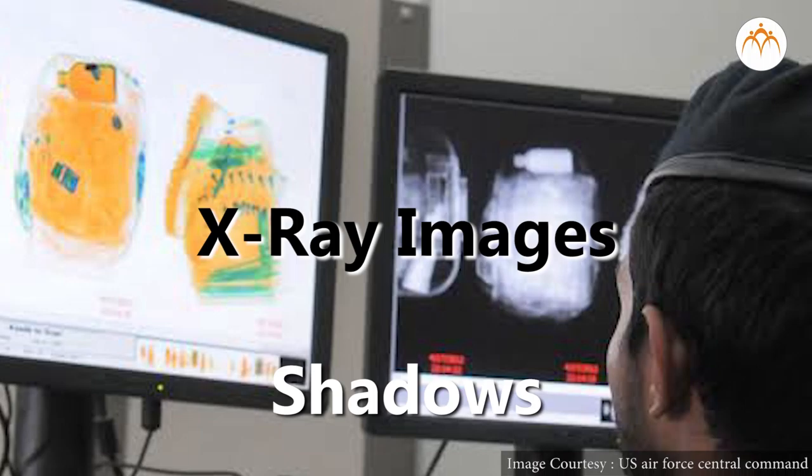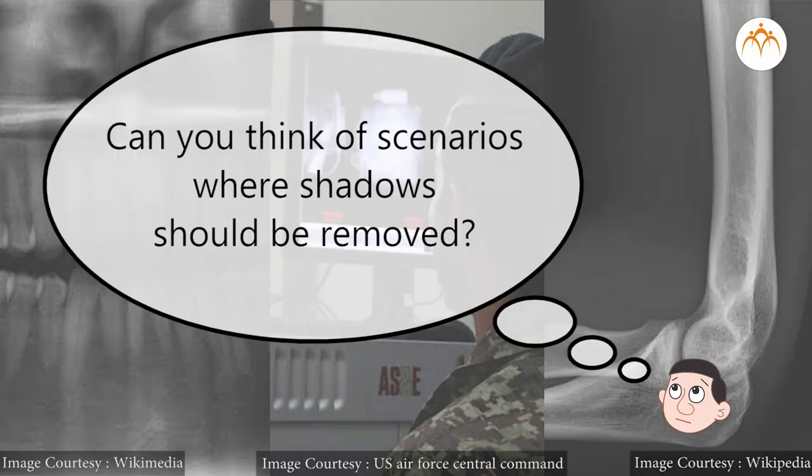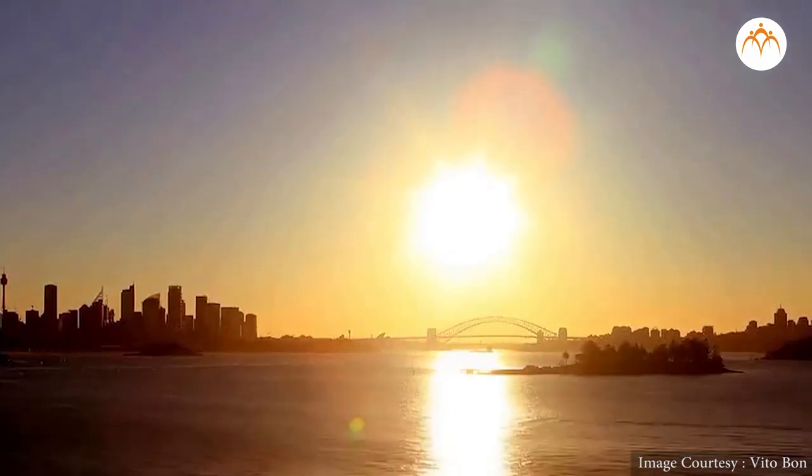The x-ray images of teeth, bones, and the contents of your carry-on bag are shadows made by a kind of light that goes through most things but is scattered by more dense materials such as bones, teeth, and metals.